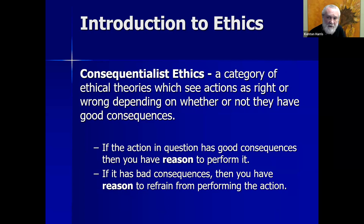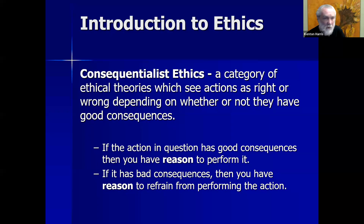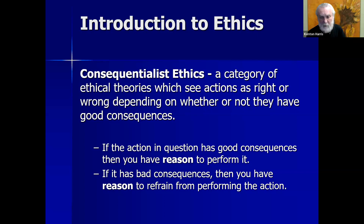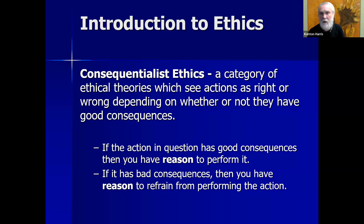Consequentialist ethics is our next category. It is a category of ethical theories which see actions as right or wrong depending on whether or not they have good consequences. Whereas in virtue ethics the moral primitive is the notion of character and virtue, in consequentialist ethics the engine of the system is the notion of consequences — securing good consequences. If an action has good consequences, you have moral reason to perform it; if it has bad consequences, you have moral reason to refrain from it. If it has good consequences, you ought to do it; if bad, avoid it.